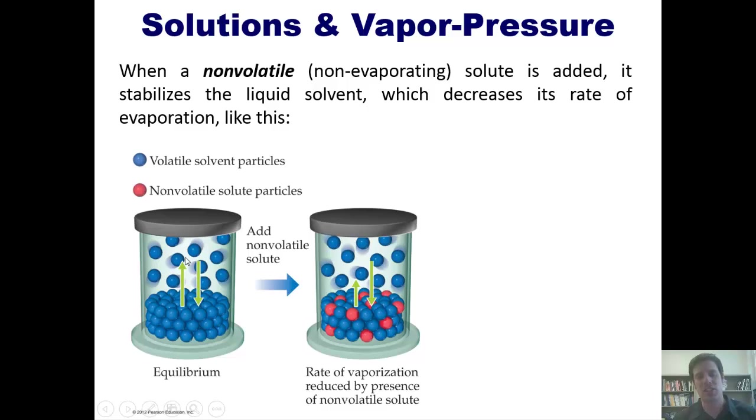Once again, if I've got my sealed solvent in here, it happens to be a volatile solvent. And a volatile solvent is a solvent that evaporates easily. If I add a solute to it that is not volatile, it stabilizes or kind of adheres the molecules of that solvent together, which decreases their rate of evaporation. I invite you to pause this and take a closer look at this figure right now until you really have your mind wrapped around this concept.